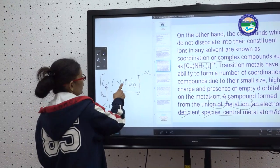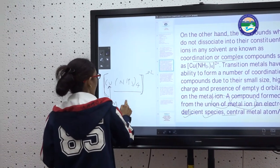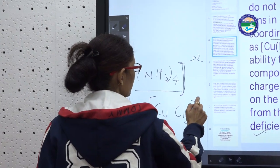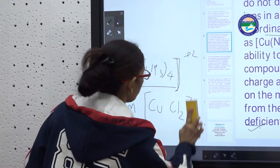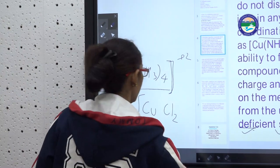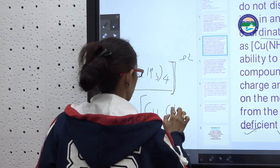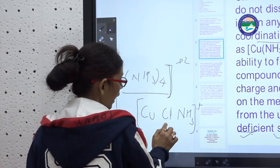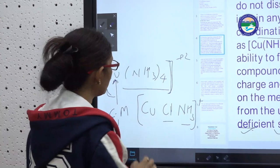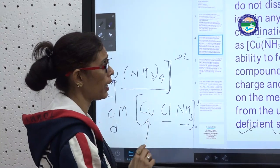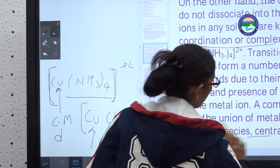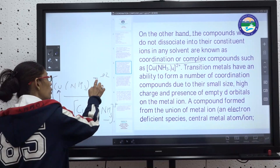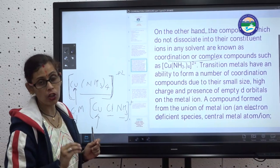Inside the bracket, whatever is present will be both ions and molecules — for example, NH₃ molecules or Cl⁻ ions. For example, in [CuCl(NH₃)]: the Cl⁻ is our ion and NH₃ is the molecule. The central metal is always a d-block element, and the surrounding ions and molecules are enclosed by a square bracket. The square bracket is compulsory for writing a coordination compound.